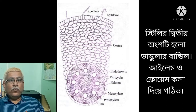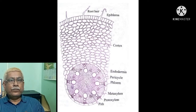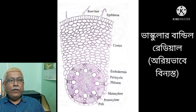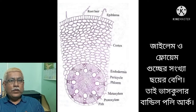Vascular bundles consist of alternating strands of xylem and phloem, so the vascular bundle is radial. The number of xylem and phloem strands are more than six, so the vascular bundle is polyarch.